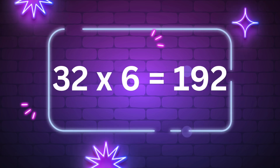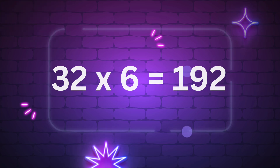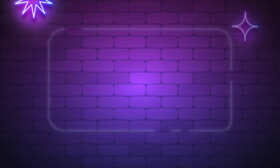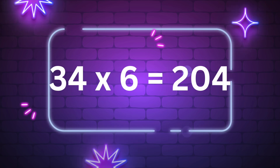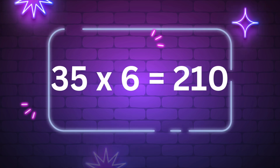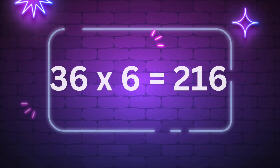Twenty-seven times five is 135. Twenty-eight times five is 140. Twenty-nine times five is 145. Thirty times five is 150. Thirty-one times five is 155.